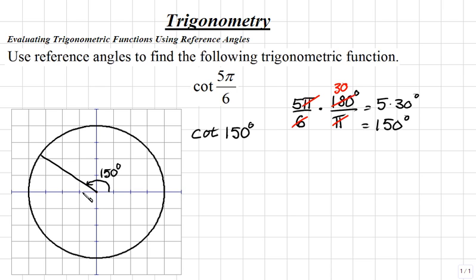To find the reference angle, recall that the reference angle is the smallest positive angle made with the x-axis that's coterminal to our given angle. So the smallest positive angle made that's coterminal with this angle would be here. To find the measure of this angle, we recall that if we were to go 180 degrees would be half a circle.